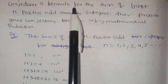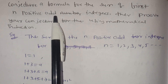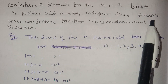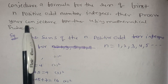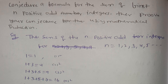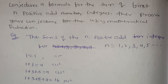Conjecture a formula for the sum of the first n positive odd integers, then prove your conjecture using mathematical induction. We need to make a statement about the first five positive odd integers.